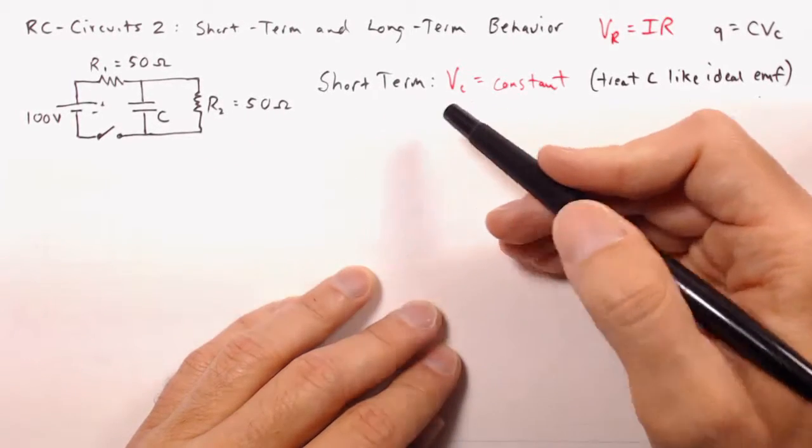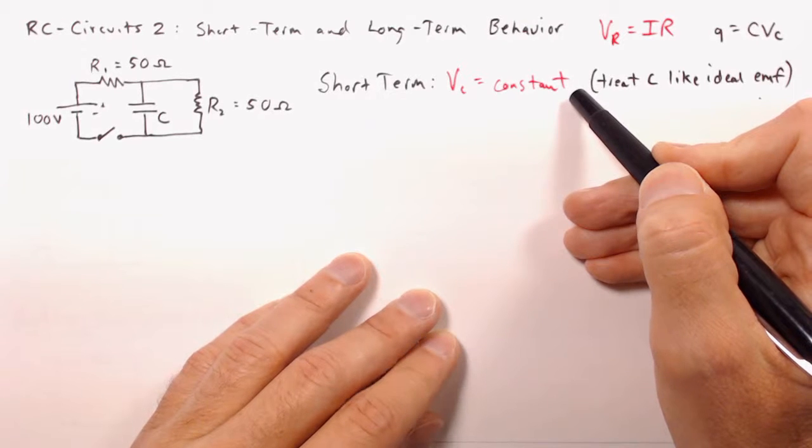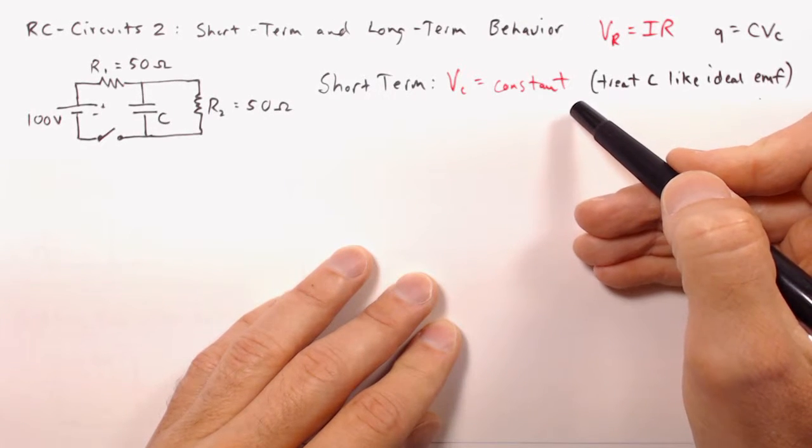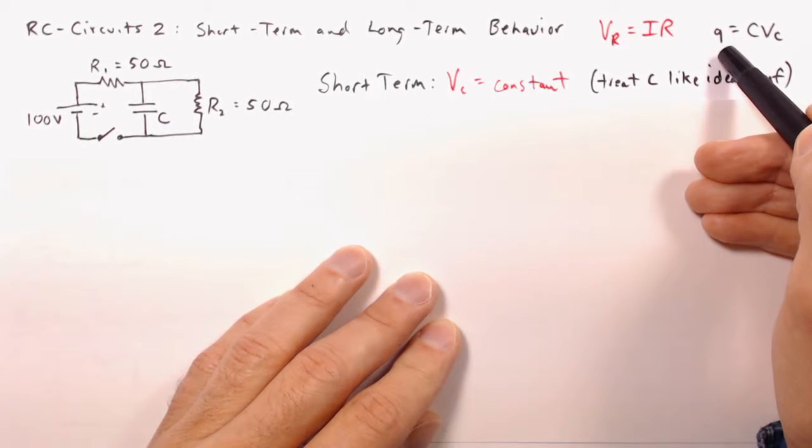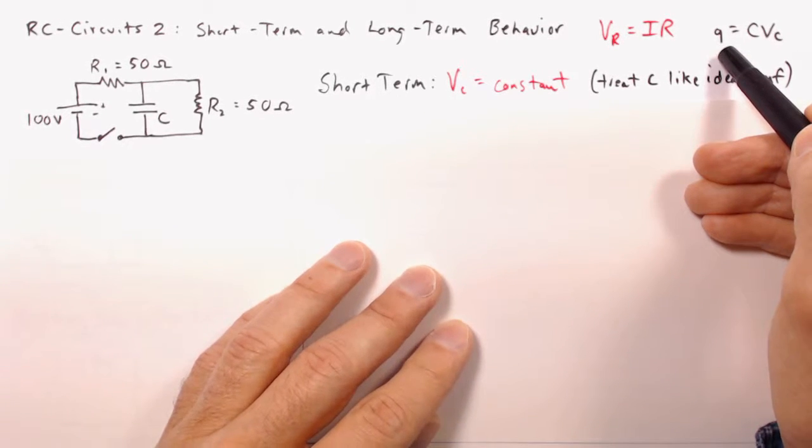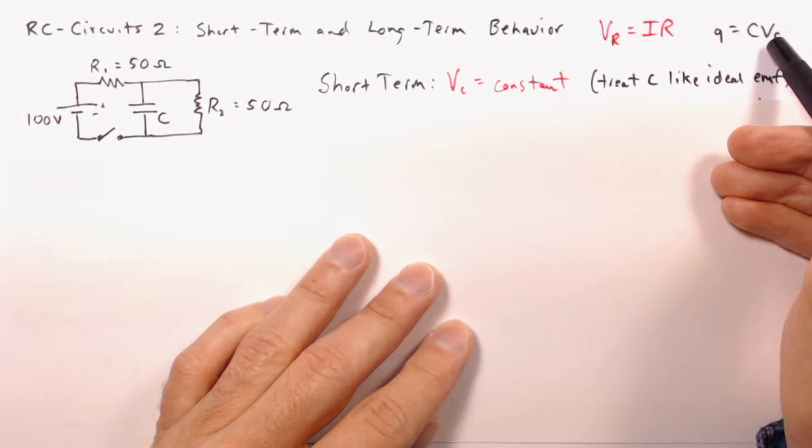Well, we need to remember that in the short-term, the voltage on any capacitor is effectively going to be a constant. And that's because the voltage on a capacitor depends on the charge, and it takes time for charge to flow into or out of the capacitor. And if we limit the time, then that's not going to change very much at all.